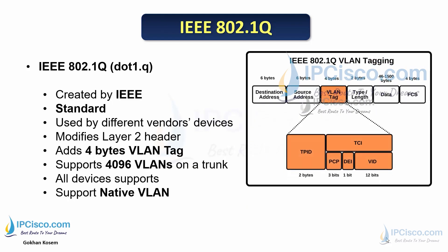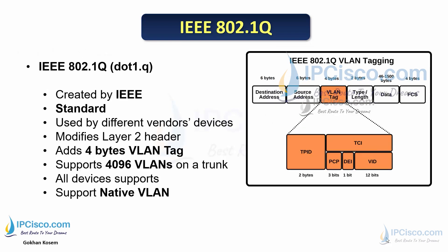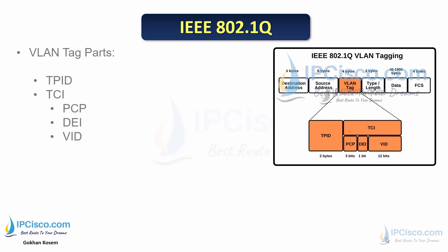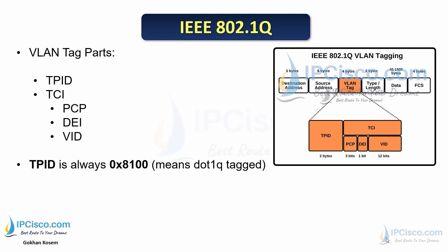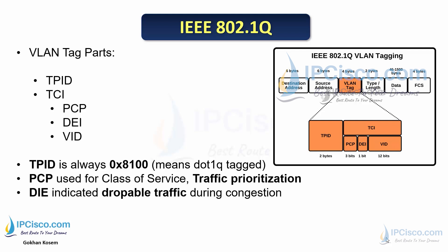The standard-based trunking protocol is 802.1Q. It is developed by IEEE and can be used by all vendors. 802.1Q modifies the Layer 2 header by adding a 4-byte VLAN tag and supports up to 4,096 VLANs on a trunk. The VLAN tag fields include TPID (always 0x8100), PCP for traffic prioritization, DEI which marks the first droppable traffic during congestion, and VID which identifies the VLAN number.